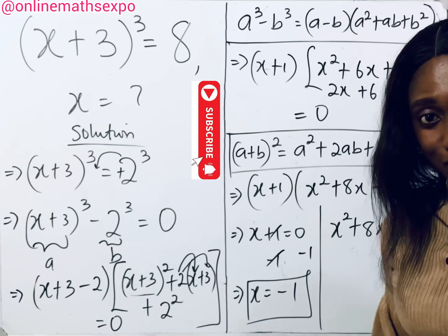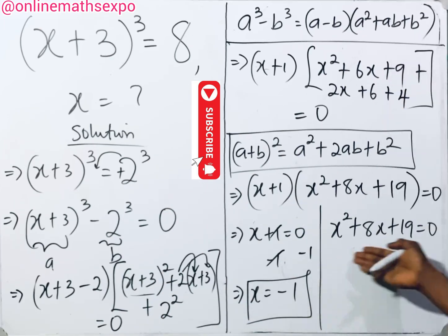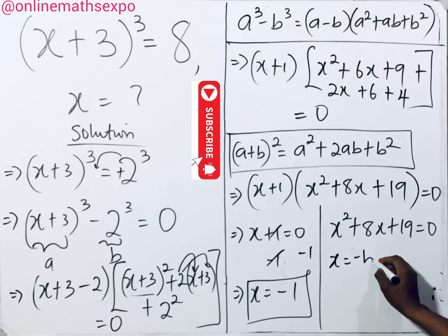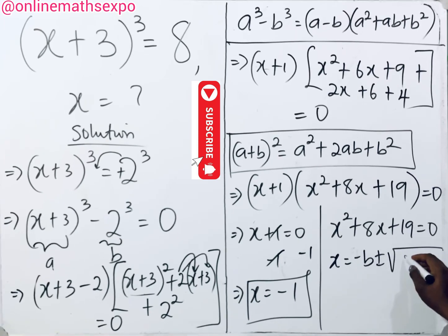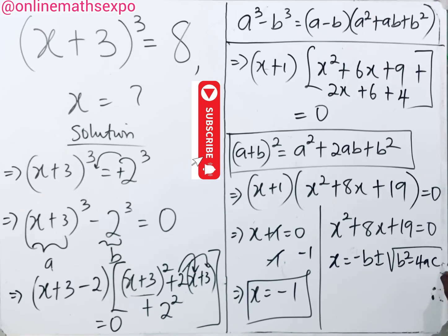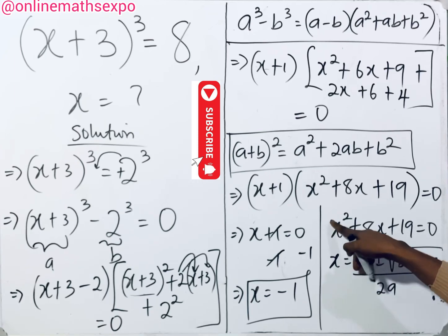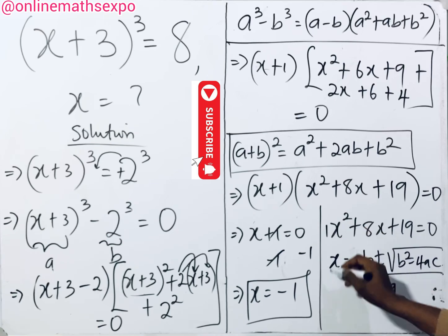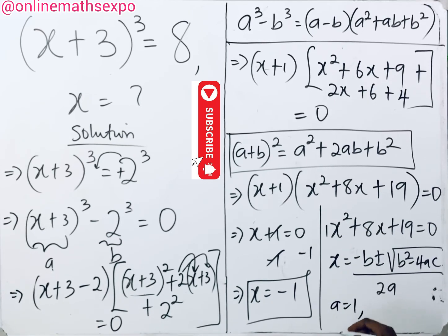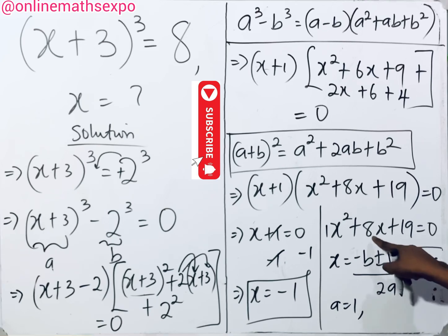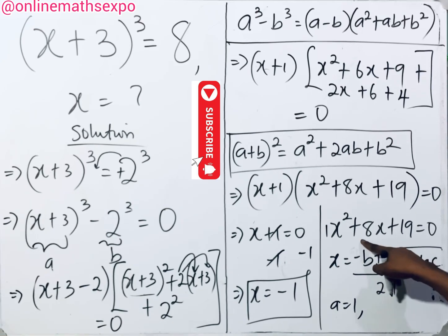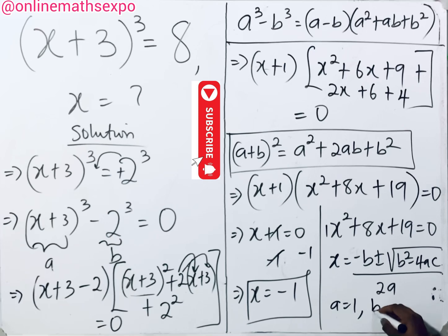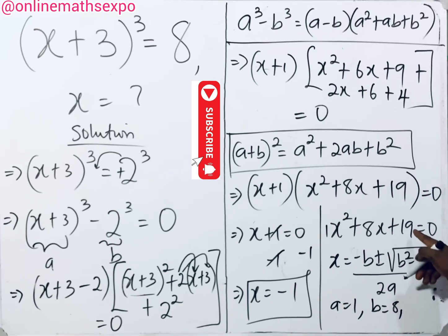To solve x² + 8x + 19 = 0, we use the quadratic formula: x = (−b ± √(b² − 4ac)) / 2a. Here, a is the coefficient of x², which is 1. b is the coefficient of x, which is 8. And c is the constant, which is 19.